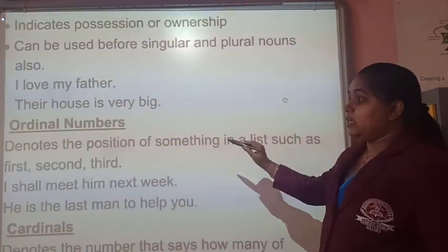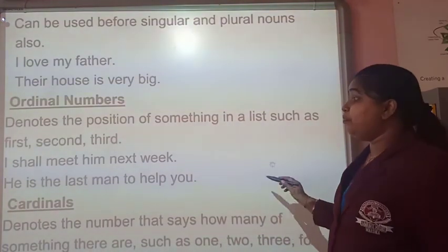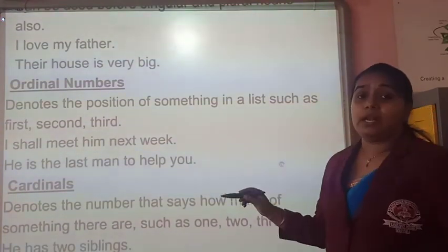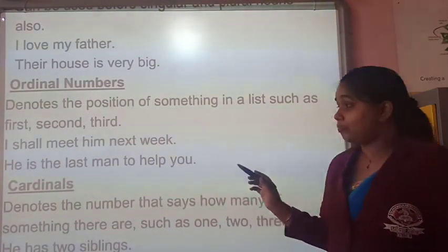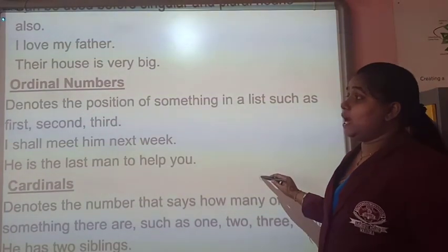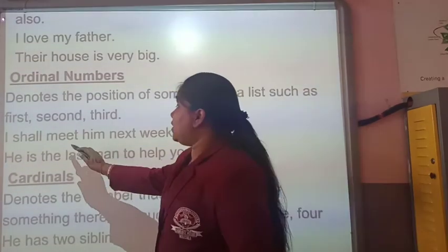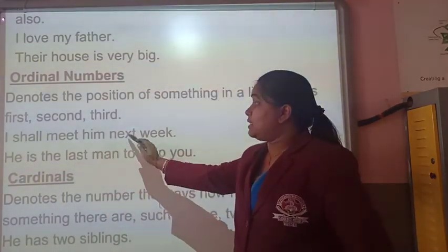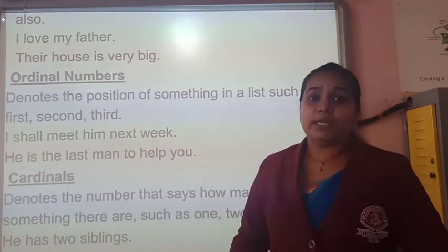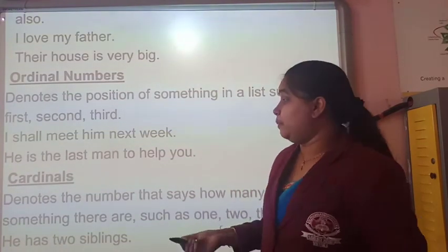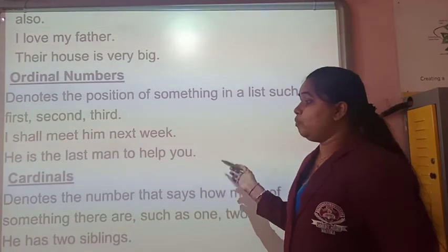Then we have ordinal numbers, which denote position — first, second, third, and so on. Let us see how we use ordinal determiners in sentences: 'I shall meet him next week.' Here 'next' is my ordinal determiner. 'He is the last man to help me.' Ordinal determiners not only denote first, second, third, but also next, the last, the first — used in that way.